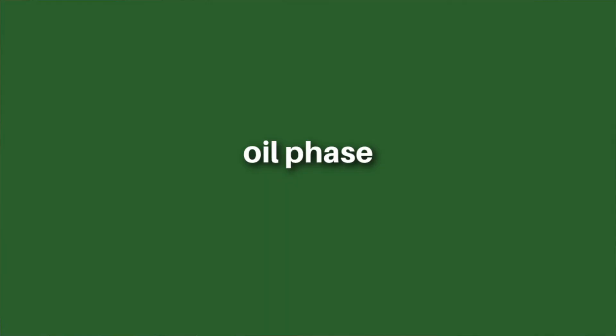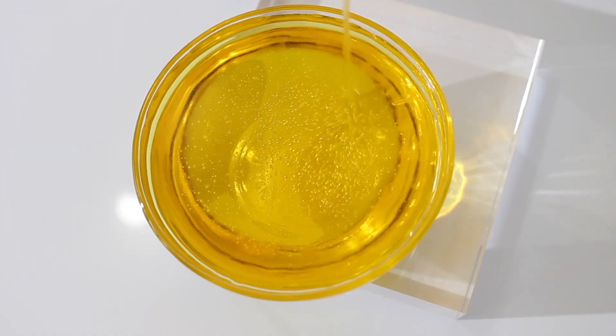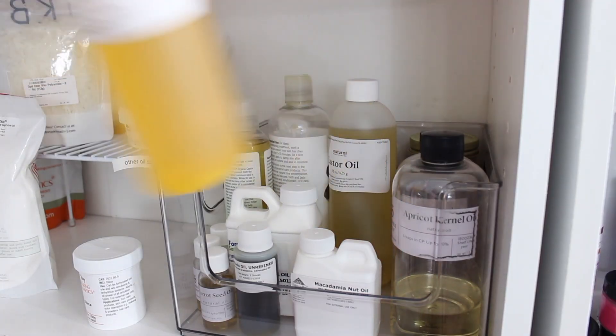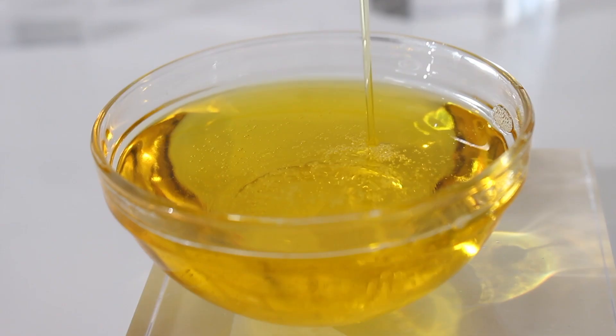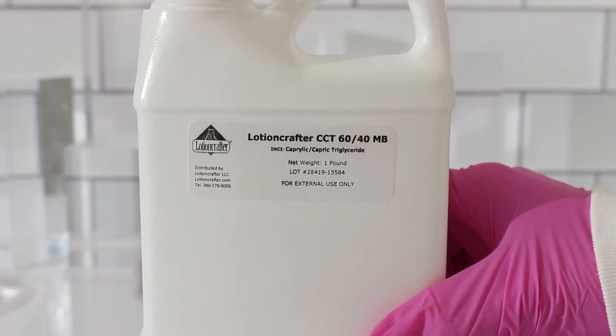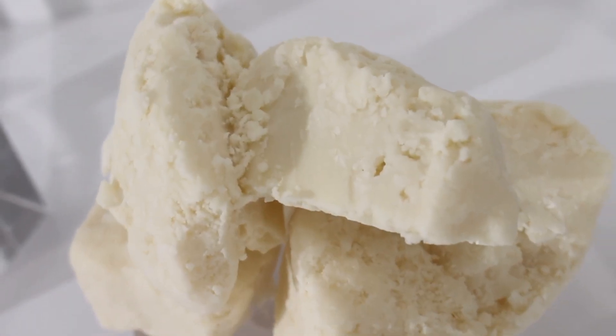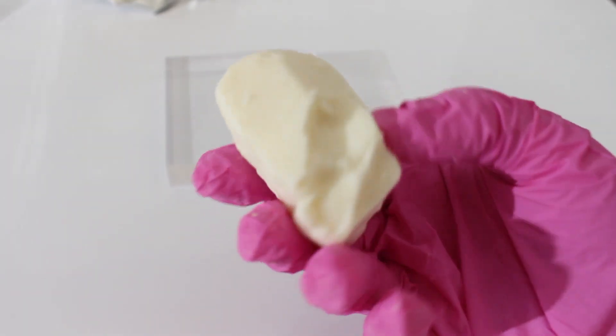Moving on to the oil phase — I first like to choose what my emollients are going to be, keeping in mind the skin type you're formulating for. For this formula, I'm keeping it for normal skin types and you can tweak it by changing out the emollients or oils. I'm going to use 15% jojoba oil, because jojoba oil is very similar to our skin's natural sebum, making it great for all skin types. If you want to make this oil free, you'd stick with emollient esters like caprylic capric triglyceride and squalane. You can also add butters — for dry skin, I really like 5% shea butter in face moisturizers.